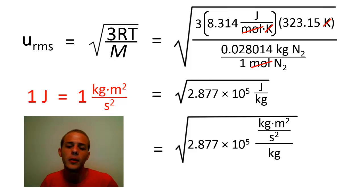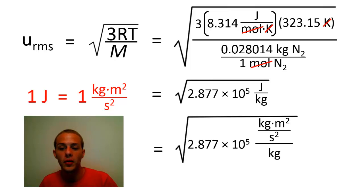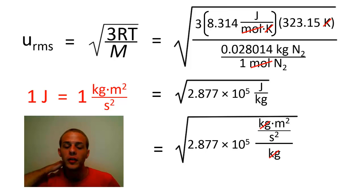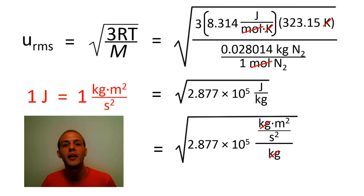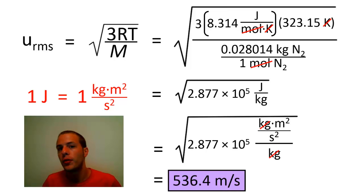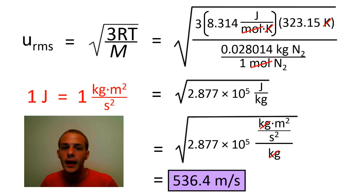Taking the square root of square meters over square seconds gives meters per second — a unit of velocity. So when we take the square root of 2.877 times 10 to the fifth, we get 536.4 meters per second. These nitrogen molecules are really, really moving fast at 50 degrees Celsius.